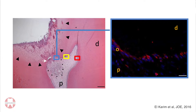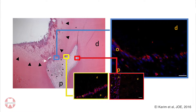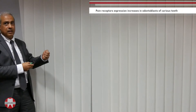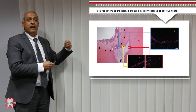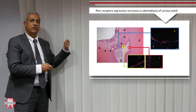Surprisingly, the elevated expression of this protein is not only under the carious injury but also in other areas of the pulp, indicating that odontoblasts throughout the pulp express a higher level of this protein. This stimulation causes these cells to release inflammatory mediators that affect the nerve terminals — and this is why the patient feels pain.